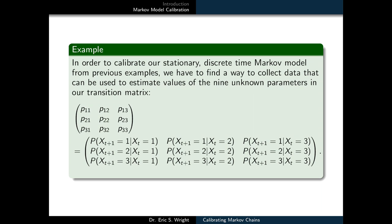In order to calibrate our stationary discrete time Markov Model from previous examples, we have to find a way to collect data that can be used to estimate values of the nine unknown parameters in our transition matrix. These are the entries P11, P12, P13, and so on, that are shorthand for representing the probabilities P of x sub t plus 1 equals 1 given x sub t equals 1, P of x sub t plus 1 equals 1 given x sub t equals 2, and so on.